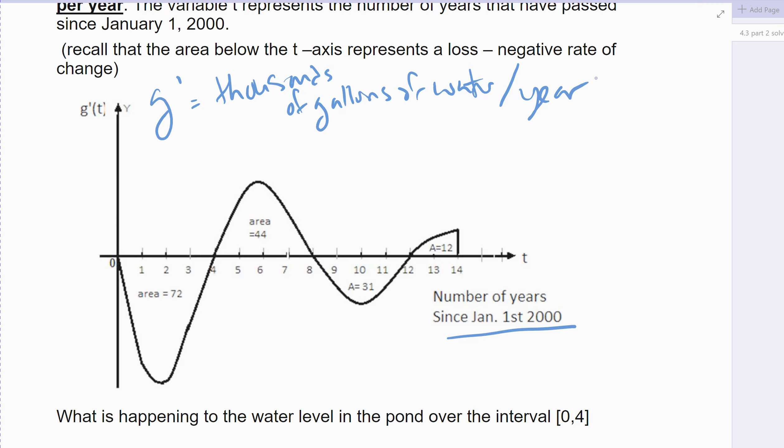So remember, area above. They give you the areas. The first area is 72, remember that's a loss because it's below, then 44 which is a gain, it's above, then 31 which is a loss, and then 12 which is a gain. So again, over the years 2000 to 2014.